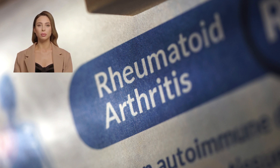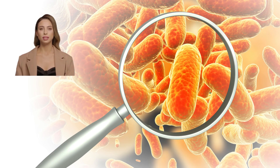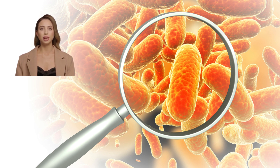Rheumatoid arthritis is different from osteoarthritis, which is a wear and tear of the joints. Rheumatoid arthritis is an autoimmune disorder that attacks your immune system, especially your joints. This means that the body cannot fight off bacteria or viruses; instead, it attacks your healthy tissue lining which covers the joints, called the synovium, causing swelling and painful joints.